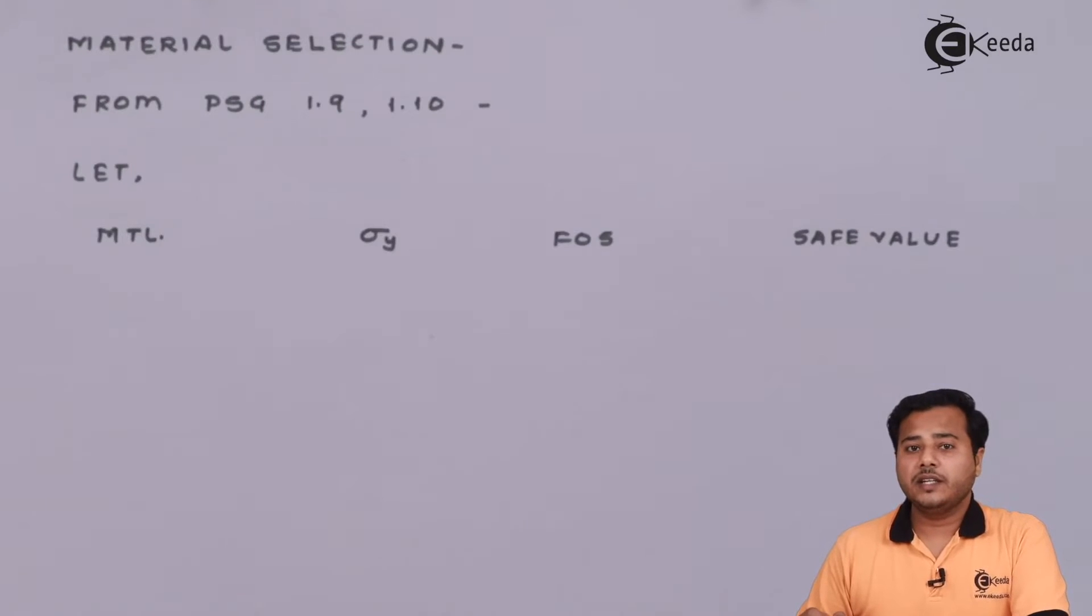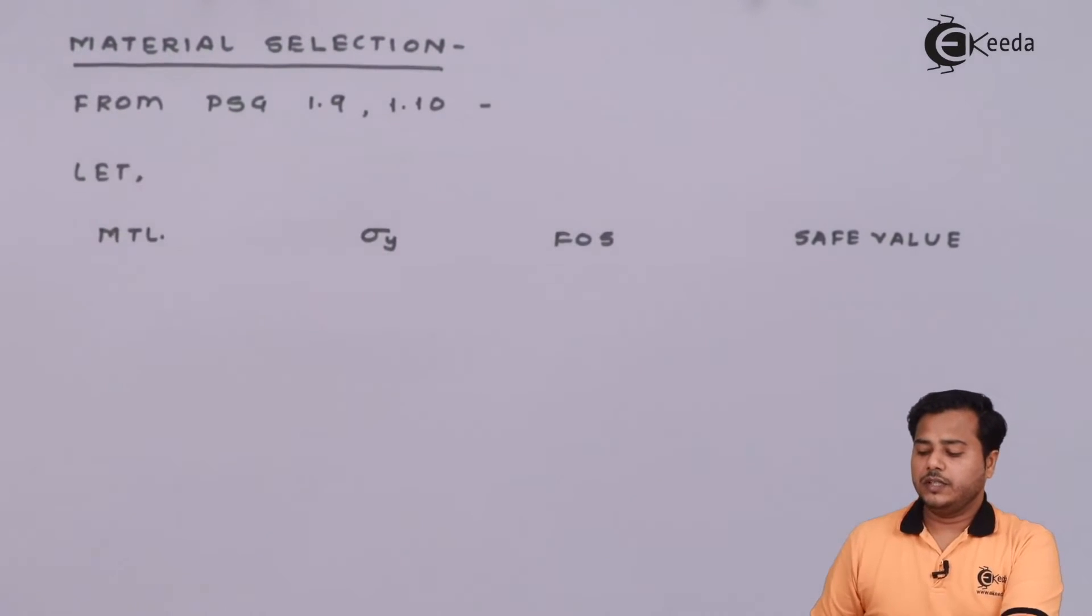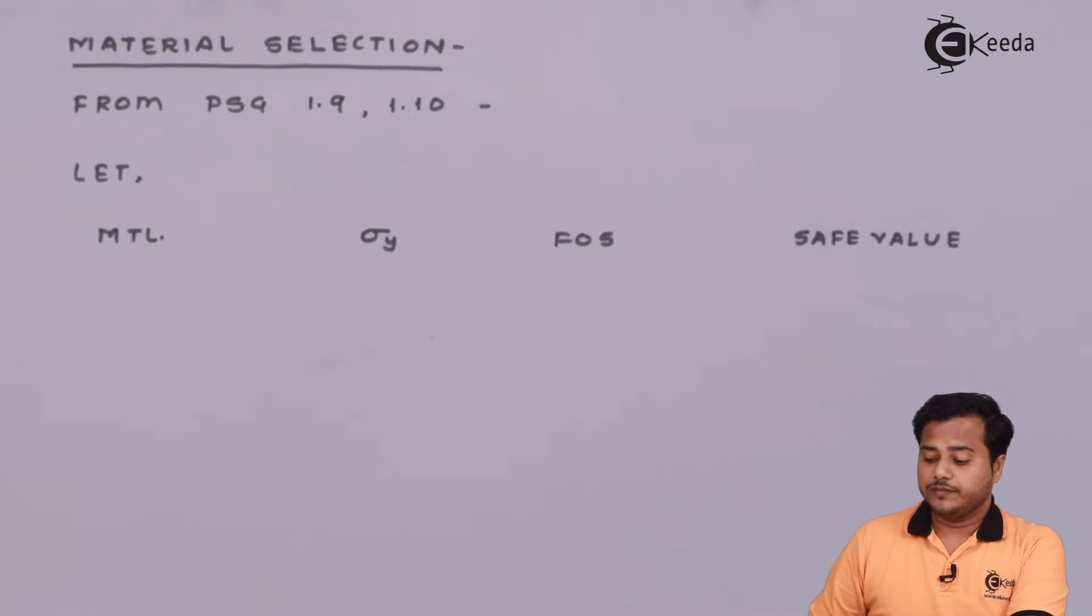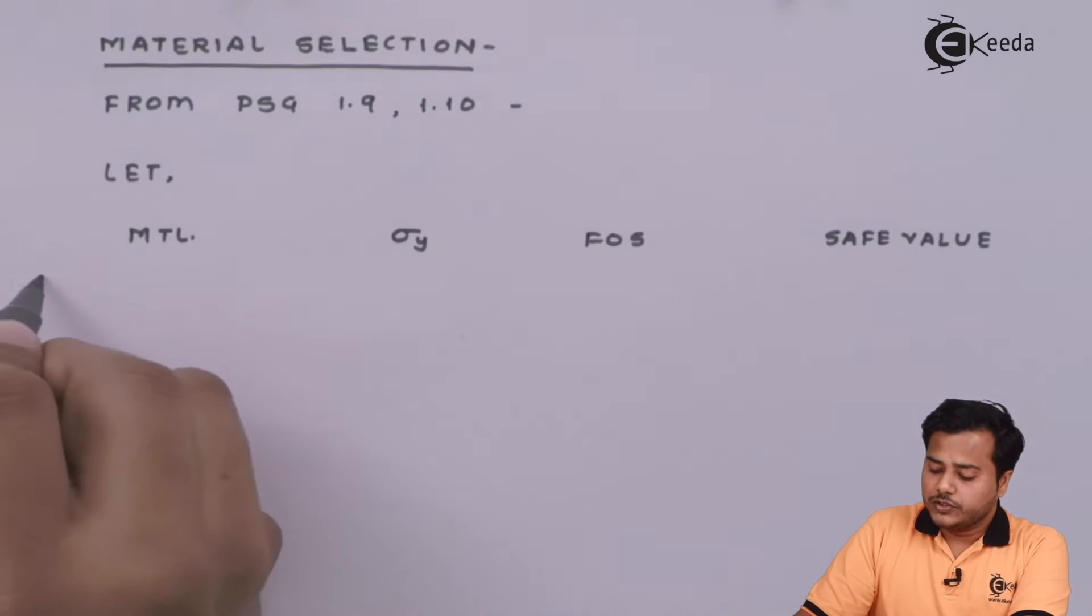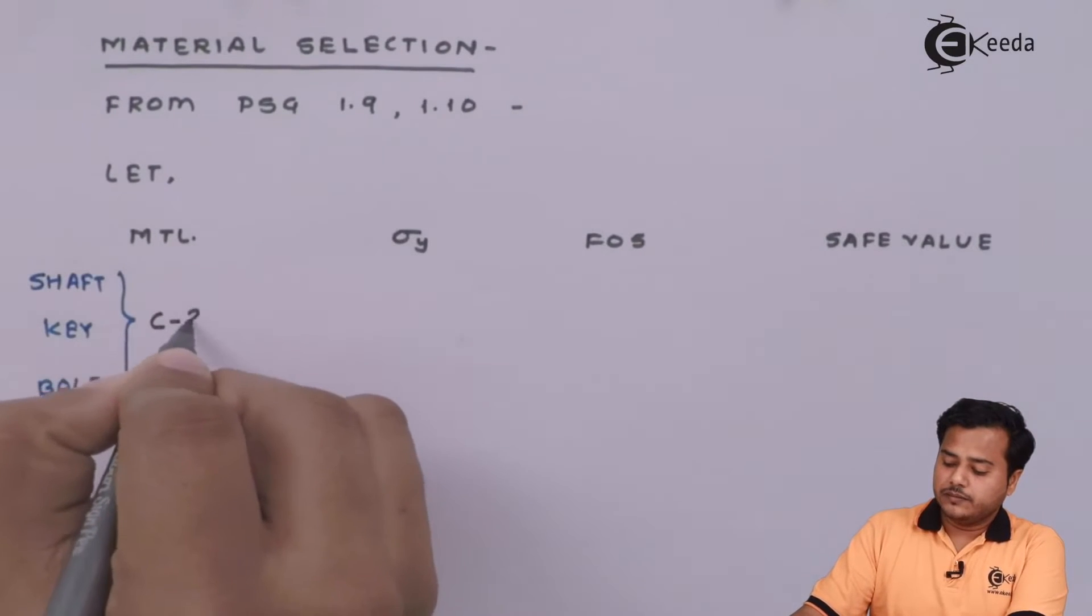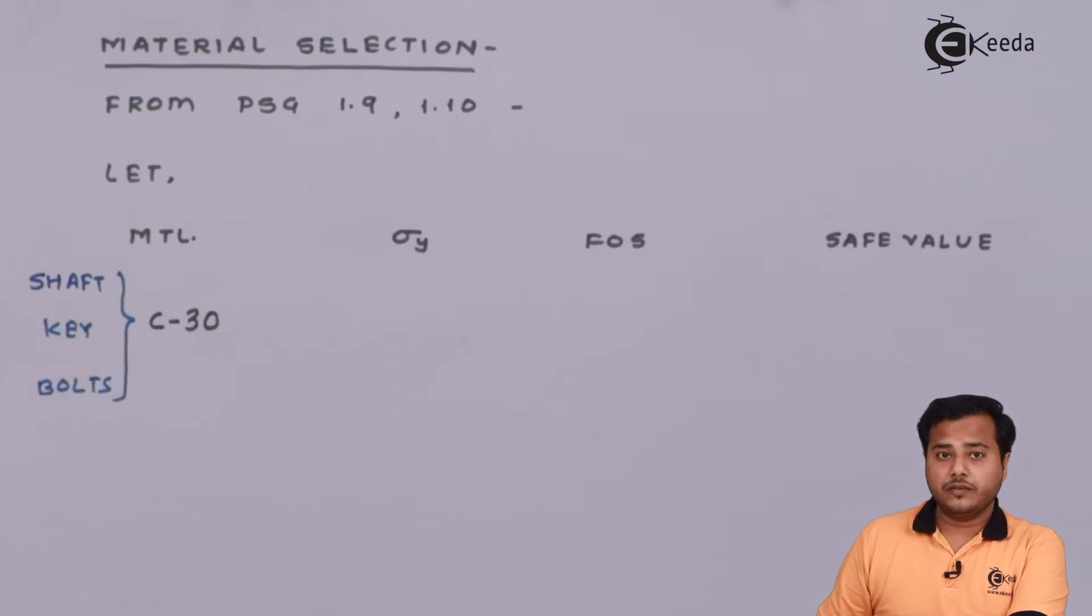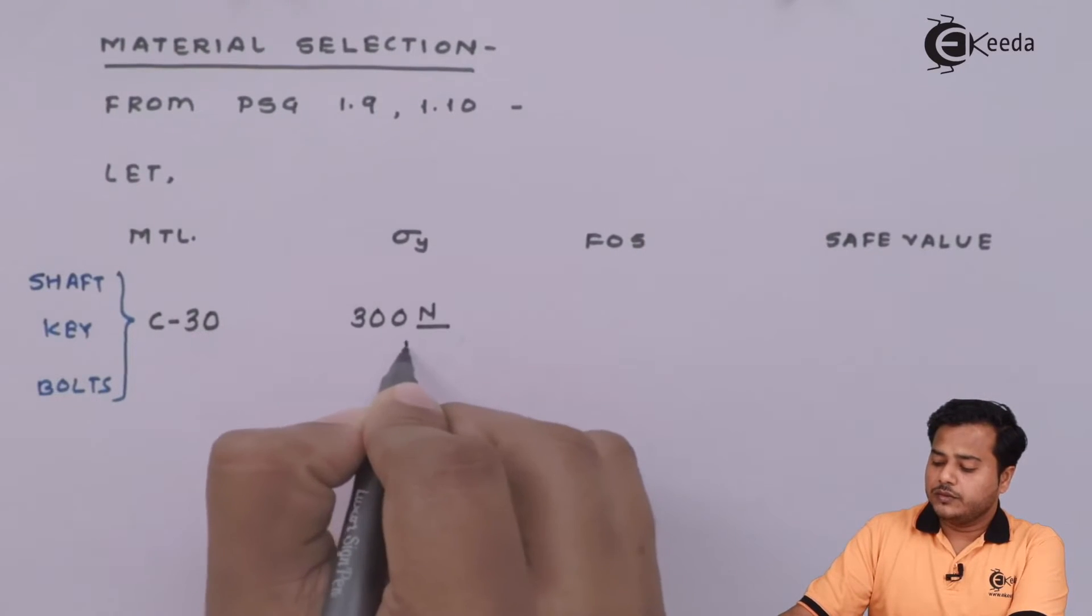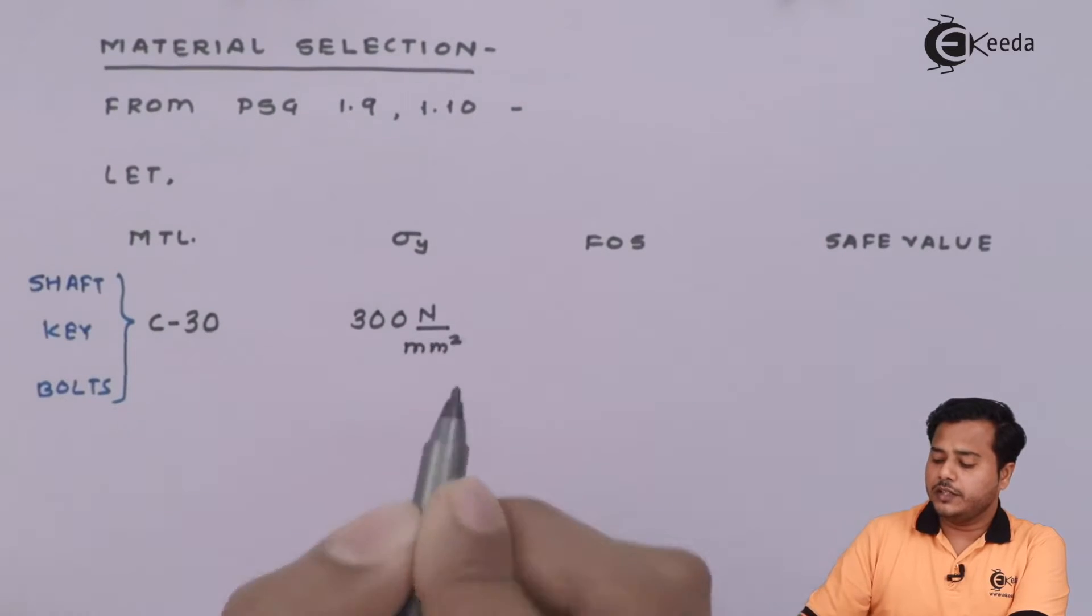The next very thing that we do is material selection. We can go through PhD data book 1.9, 1.10 and select standard materials. We can select shaft, key, and bolts. Let the material be C30, which is preferred for all such selections. You will find the value of yield stress 300 N per mm square. Factor of safety generally considered for ductile materials is 4.